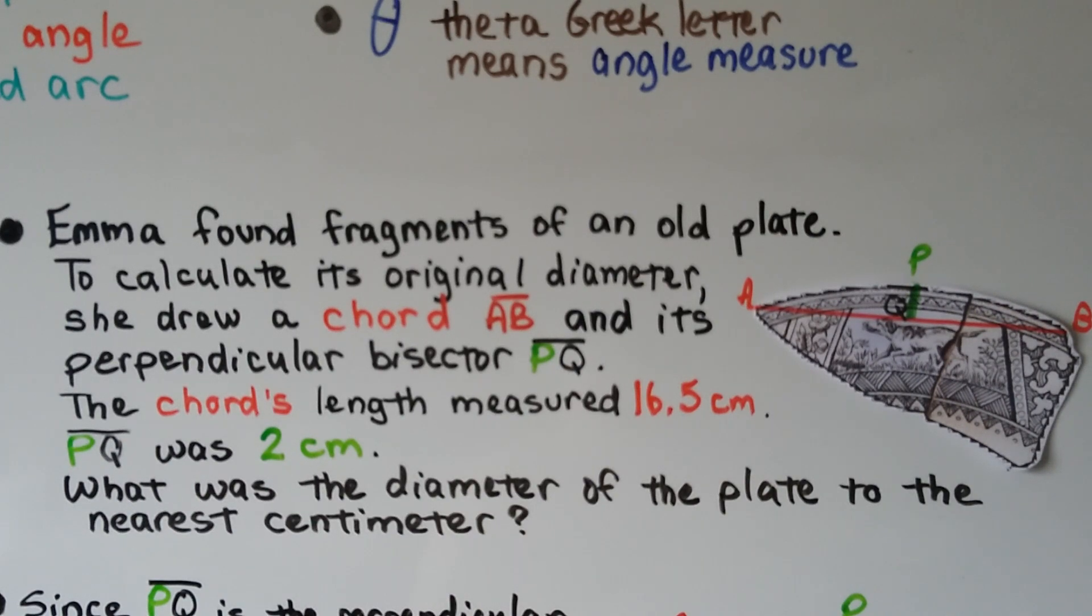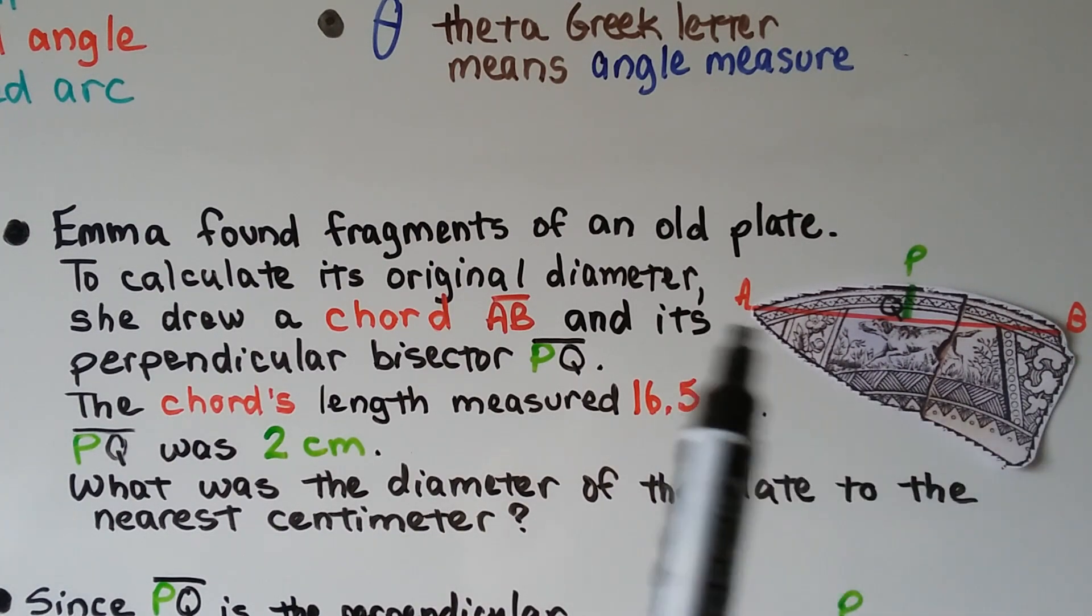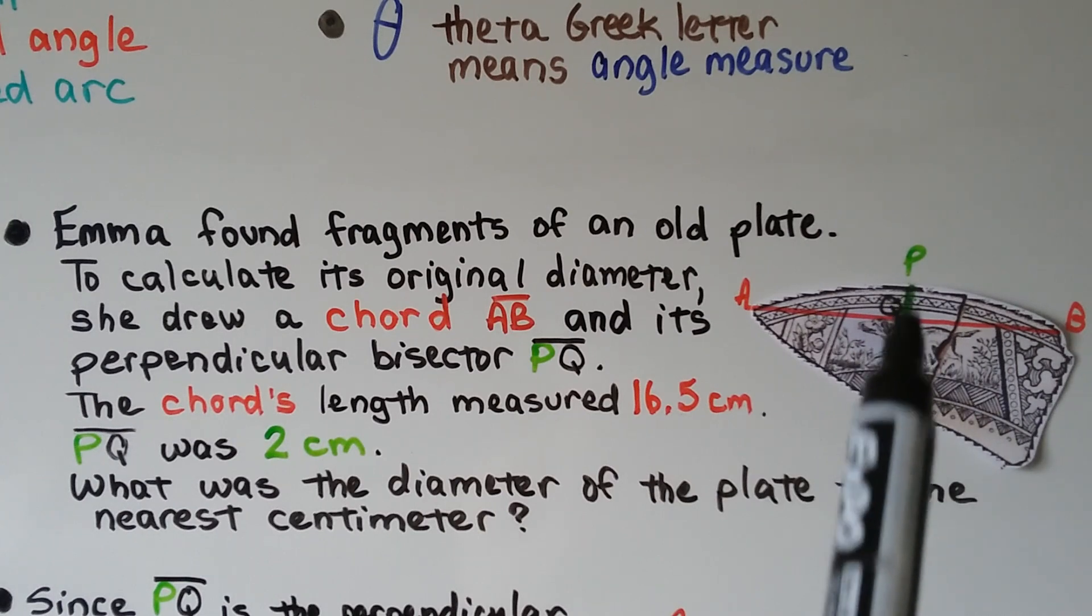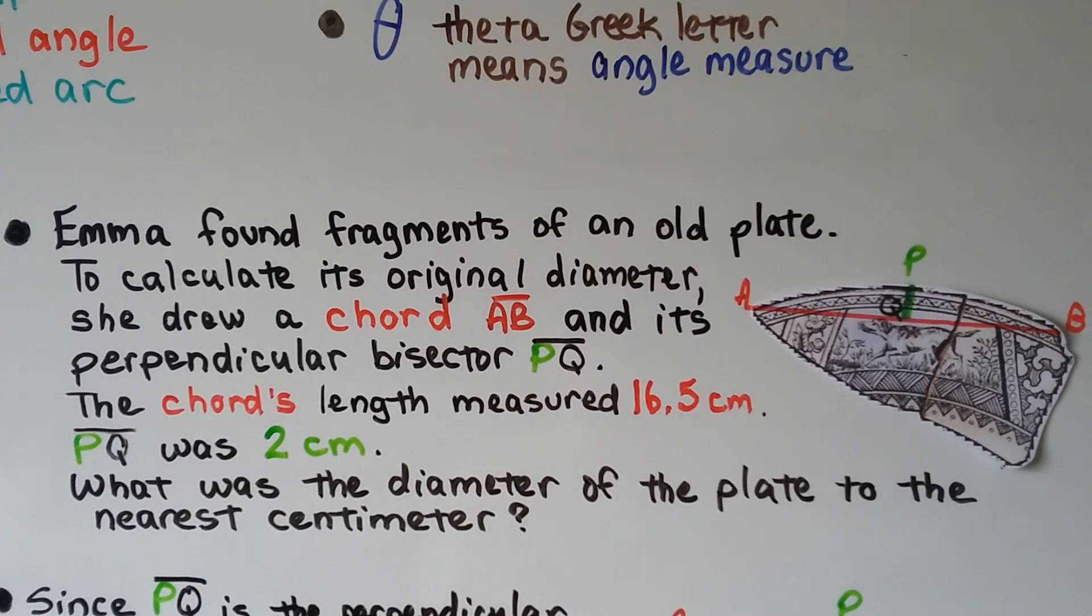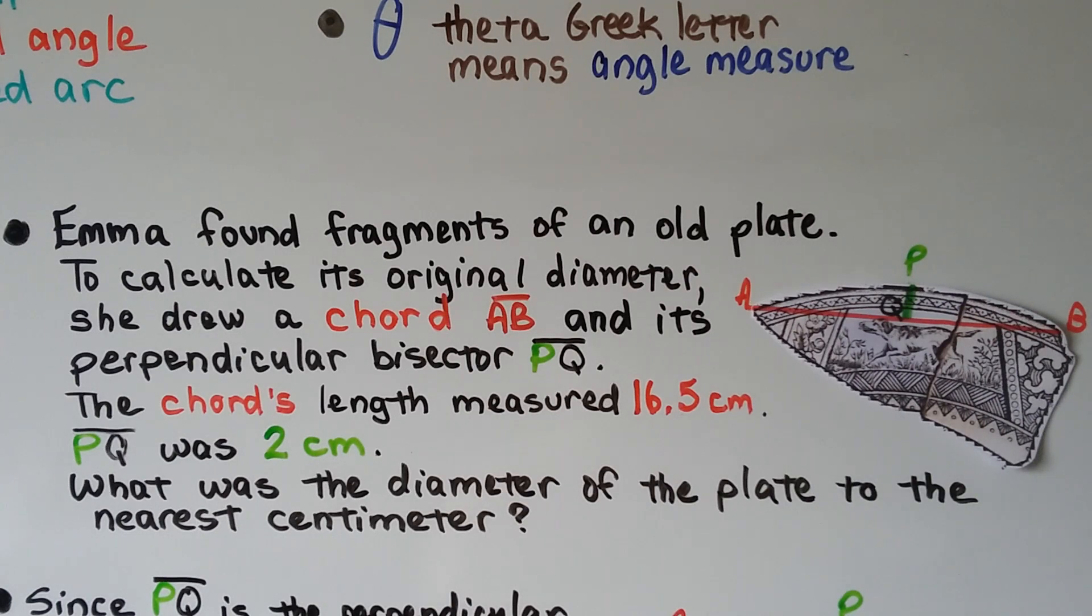Emma found fragments of an old plate. To calculate its original diameter, she drew a chord AB and its perpendicular bisector PQ. The chord's length measured 16.5 centimeters, and PQ was 2 centimeters. So what was the diameter of the plate to the nearest centimeter?